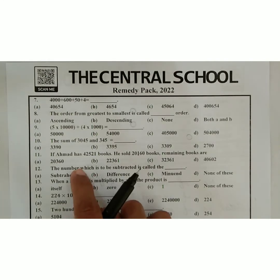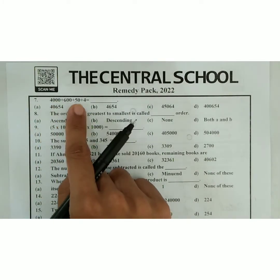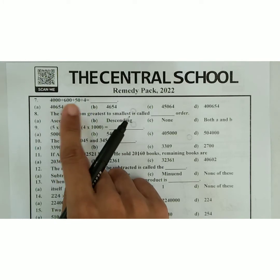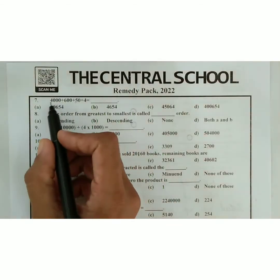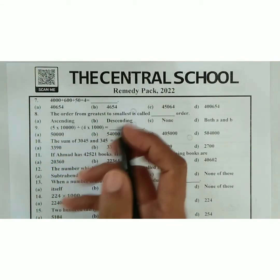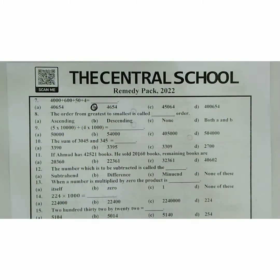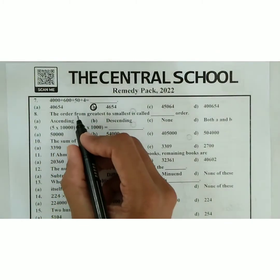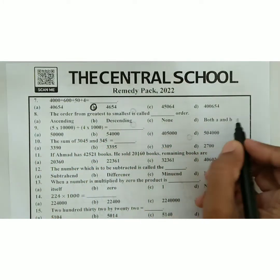Now students, let us start. First, we have four thousand plus six hundred plus fifty plus four. We have to convert this into contracted form. So students, we write only the digits: four, six, five, and four. So the correct answer is four thousand six hundred and fifty-four.